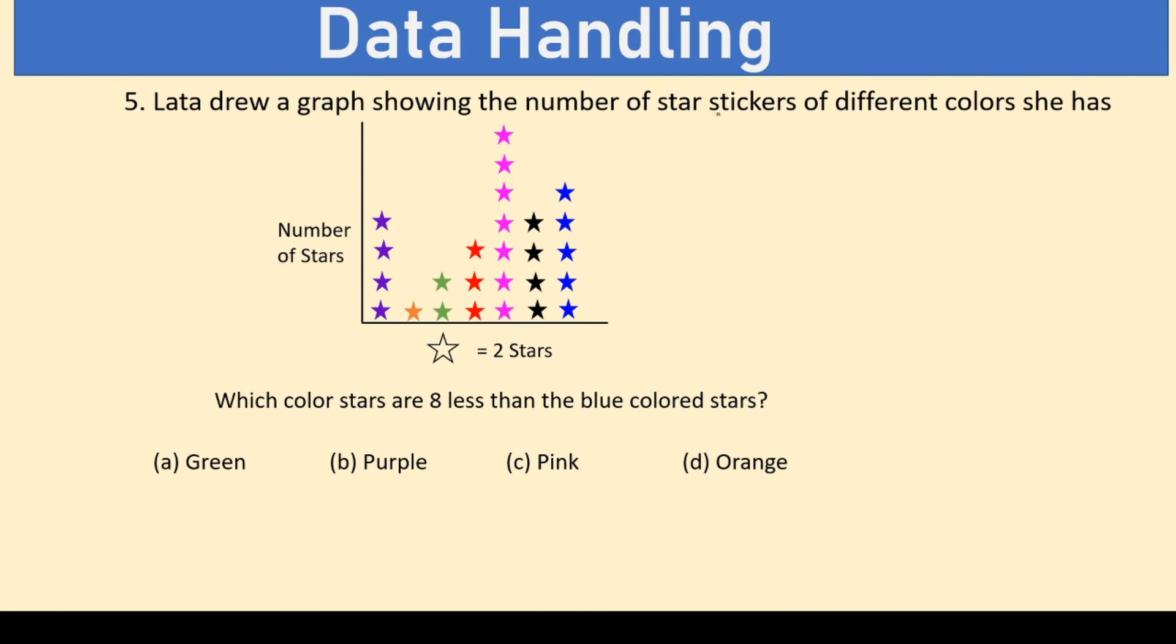Lata drew a graph showing the number of star stickers of different colors she has. These are the number of stars and these are the kind of stickers that she has. Now, each star sticker is actually two stars. Which color stars are eight less than the blue colored stars? So, let us look at the blue colored star. There is one, two, three, four and five. So, five blue colored stars is equal to five times two. Because each star sign is equal to two stars. That is equal to ten stars. So, this is the number of blue colored stars. Now, we need to find the color star which is eight less. That means you reduce eight from this which will give you ten minus eight. That is equal to two stars. Now, which one has two stars? Well, you would think green. But no. Remember, each star is equal to two star. So, your right answer is orange because one star is actually equal to two stars. Hence, your option is option D, orange.